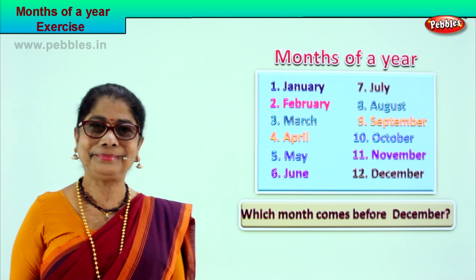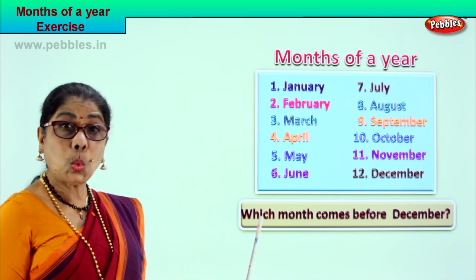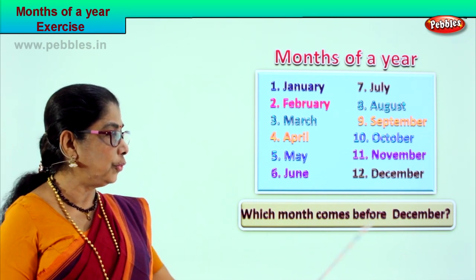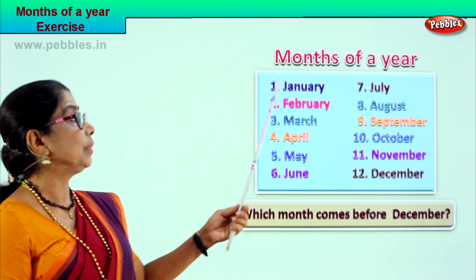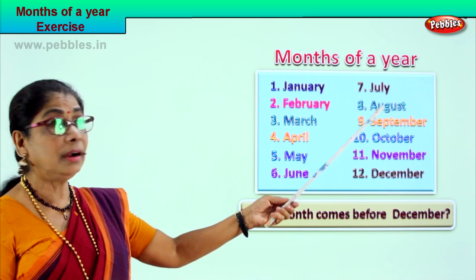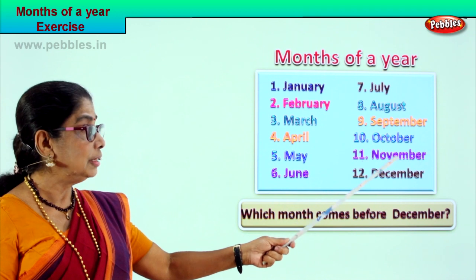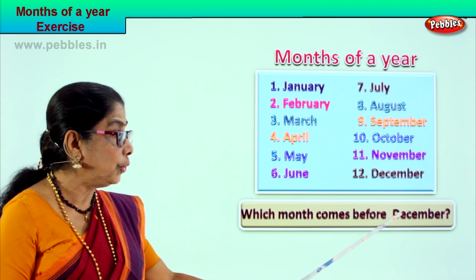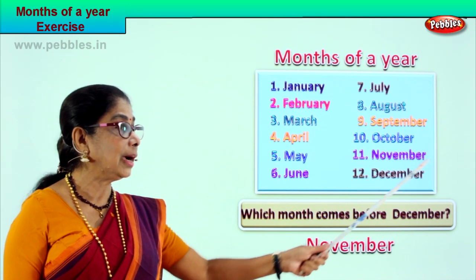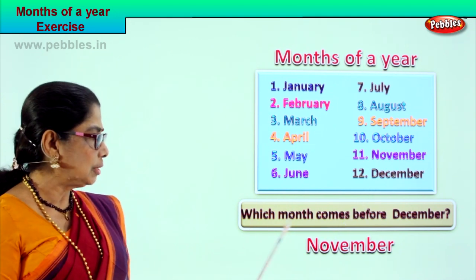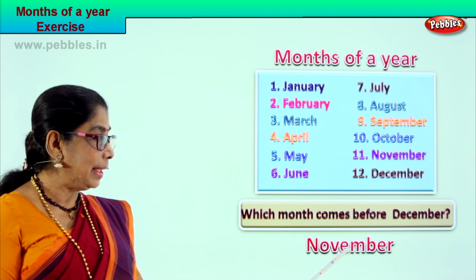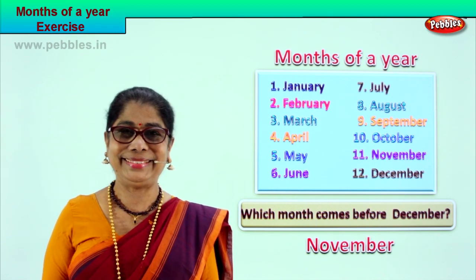Read the question with me: which month comes before December? Let's look at the chart — January, February, March, April, May, June, July, August, September, October, November, then December. Which month comes before December? The 11th month — November comes before December. The month of November comes before December. Spell November: N-O-V-E-M-B-E-R. November. Very good. Did you enjoy the exercise?